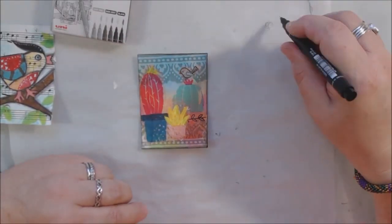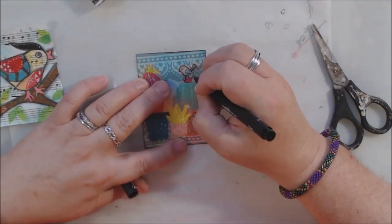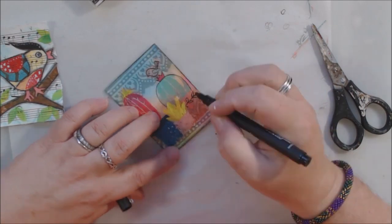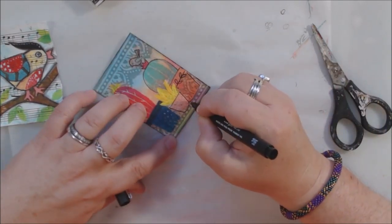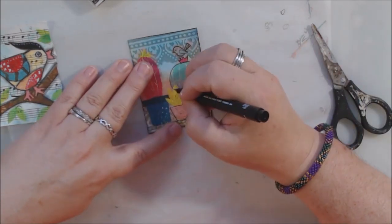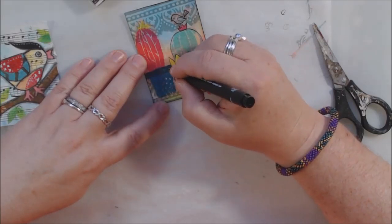So I put white gesso on the back of the napkin just in that part so that it's now opaque instead of translucent. Then when it goes over the top of the other pot, it covers it.